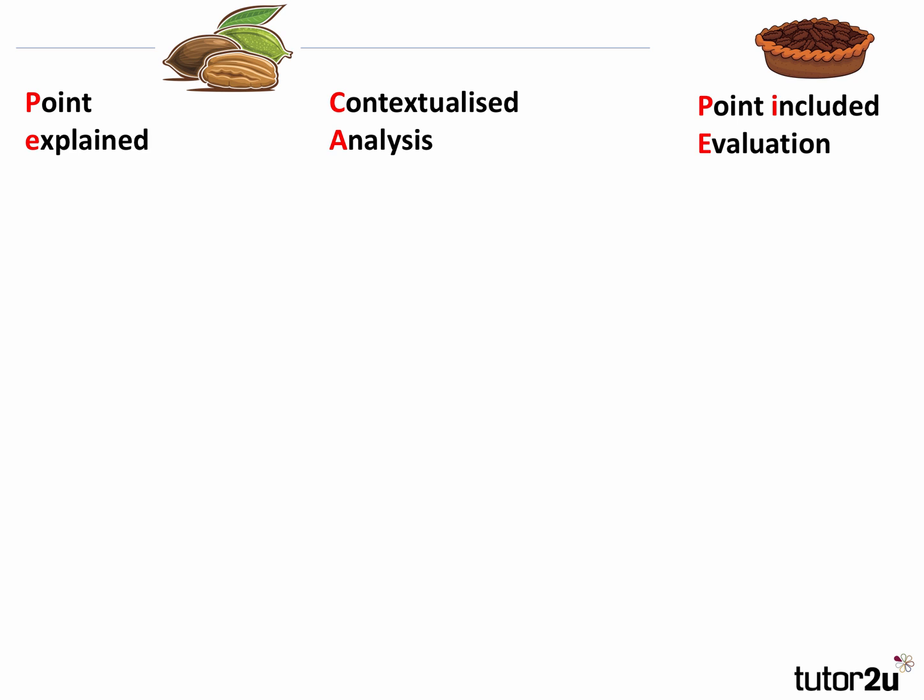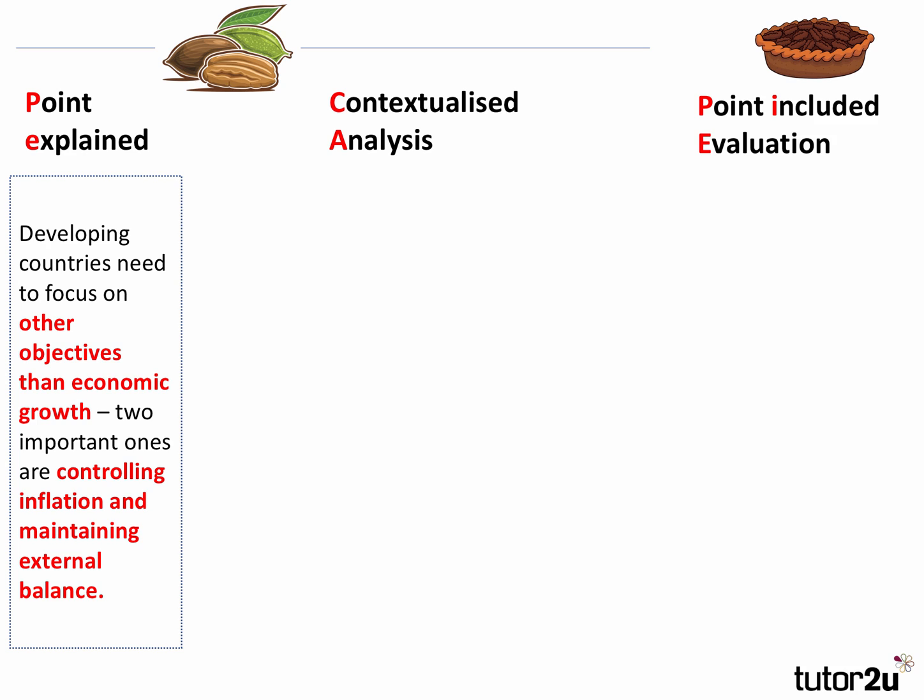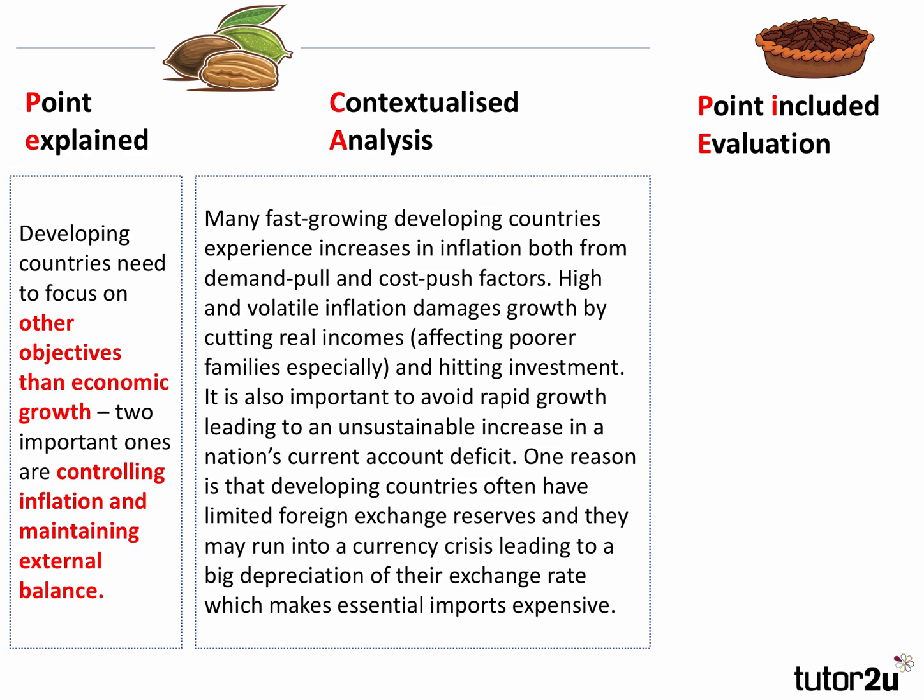The fourth point is to go in the other direction: developing countries also need to focus on other objectives alongside economic growth. Two important ones are controlling inflation and maintaining balance of payments stability. Many fast-growing developing countries experience increases in inflation from both demand-pull and cost-push factors. High and volatile inflation damages growth by hitting real incomes — especially for poor families — and curbs investment. It's also important to avoid rapid growth leading to a large increase in the nation's current account deficit. Developing countries often have limited currency reserves and could easily run into a currency crisis, leading to a big depreciation of the exchange rate, which makes essential imports very expensive.